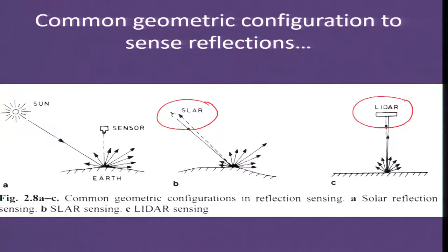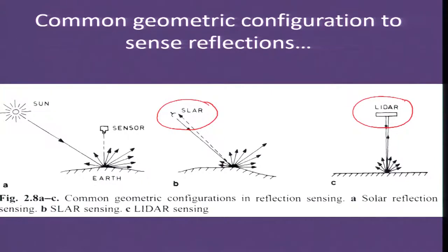Welcome back. In the last two lectures we have been discussing about the electromagnetic spectrum and we also talked about the earth energy balance and budget. This was discussed because it plays an important role in terms of the data we are interested in collecting in the form of the reflectance of light. Different materials will have different reflectance and different spectral curves.